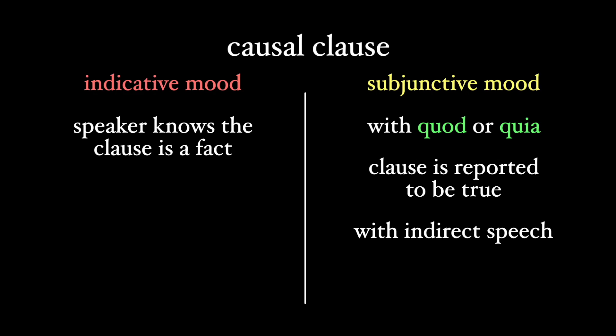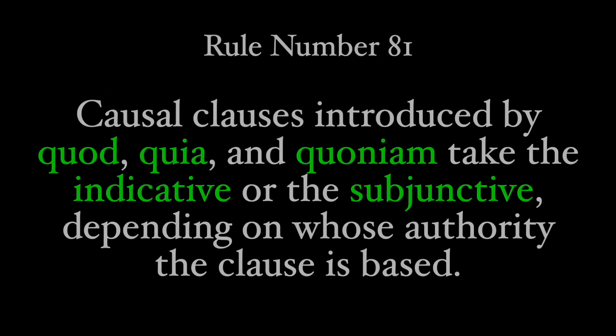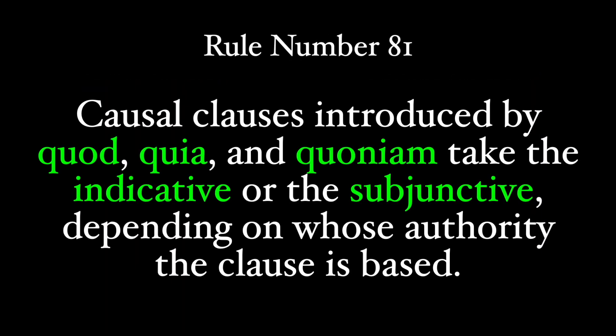And this maps out well with what we know about the indicative and subjunctive moods. The indicative is used for factual statements, while the subjunctive mood is used for things that may or may not be true. So rule number 81: causal clauses introduced by quod, quia, and quoniam take the indicative or the subjunctive, depending on whose authority the clause is based.